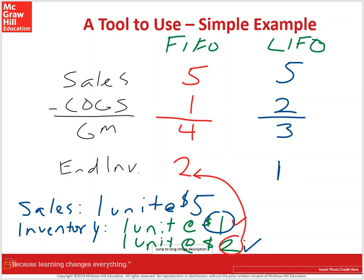For a deflationary environment, you don't need to redo the whole example — just switch the headings. Make the FIFO column LIFO and the LIFO column FIFO. So in deflation, LIFO would have the lowest COGS, and FIFO would have the lowest ending inventory. This is a simple tool you can use to quickly think through questions about COGS, gross margin, and ending inventory under different environments.